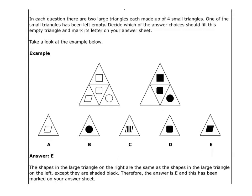Take a look at the example below. The answer here is E. The shapes in the large triangle on the right are the same as the shapes in the large triangle on the left, except that they are shaded black. Therefore, the answer is E, and this has been marked on your answer sheet.